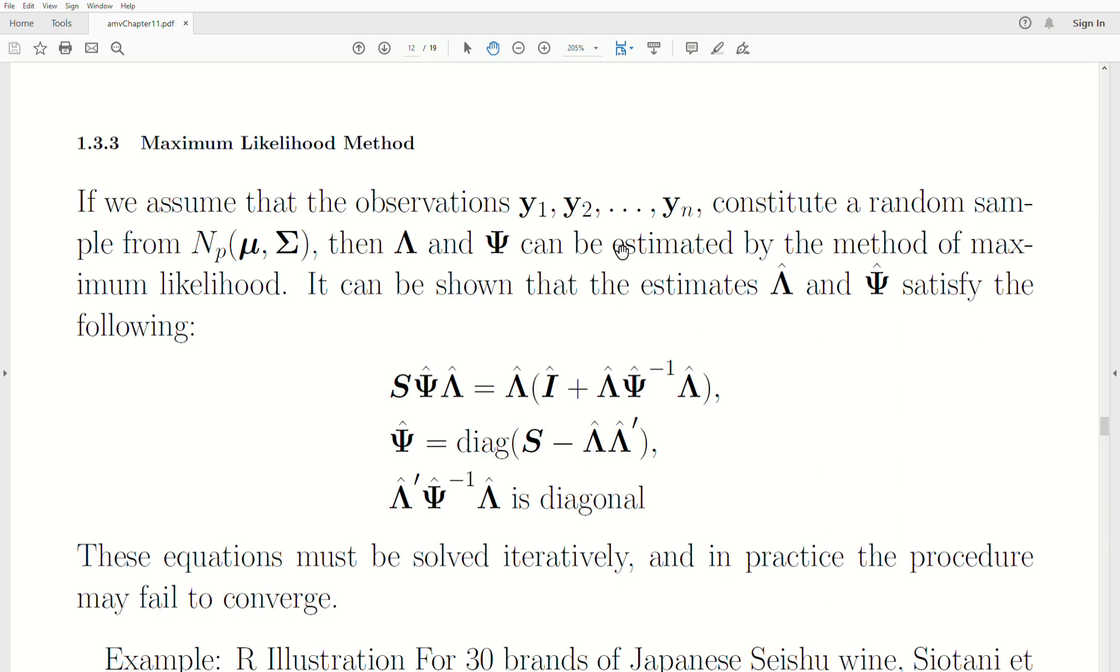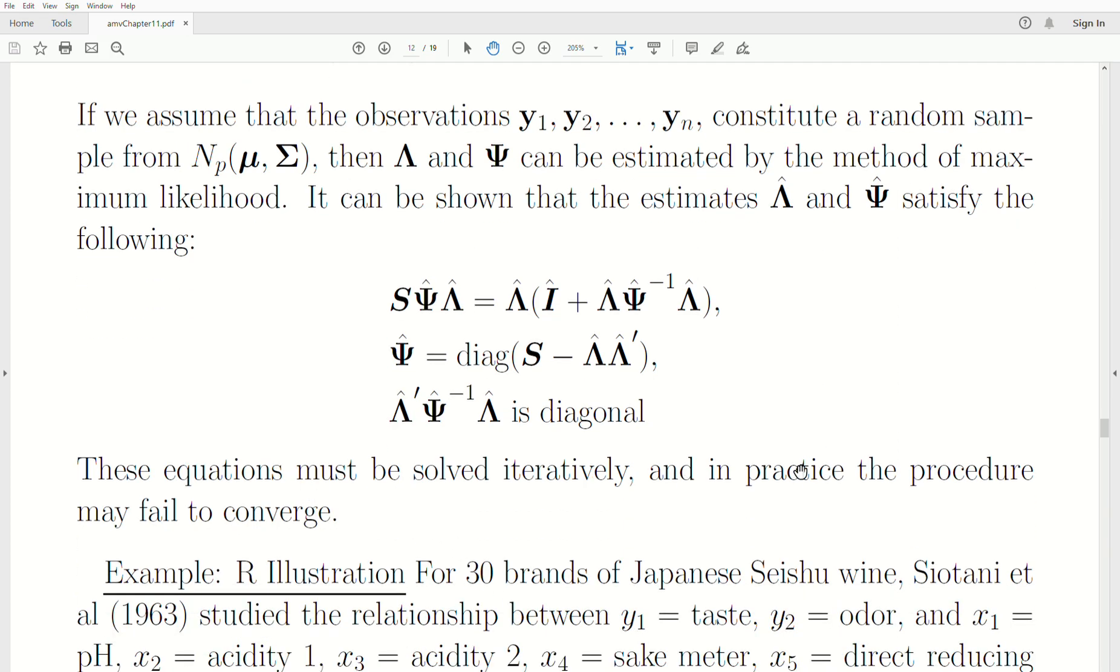It can be shown that the estimates must satisfy these equations. When you put in the likelihood of Y, the normal distribution, you take partials with respect to lambda and psi, then you get these equations. This last equation helps the lambda parameters be unique when you assume that this must be a diagonal matrix. The equations must be solved iteratively, and in practice the procedure may fail to converge.